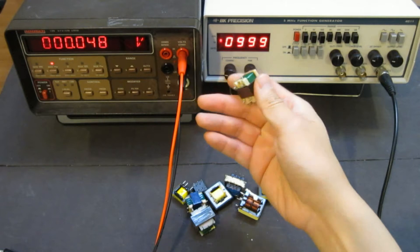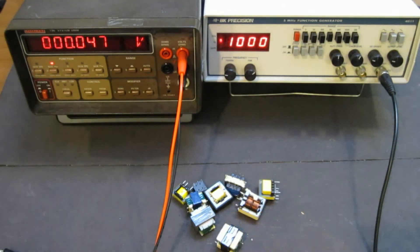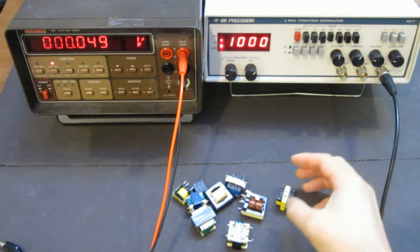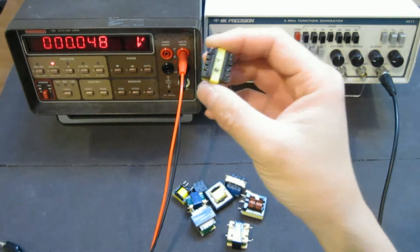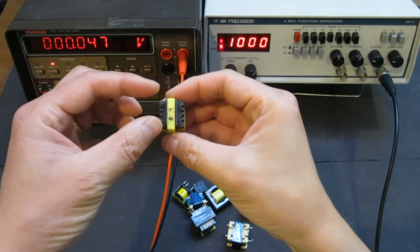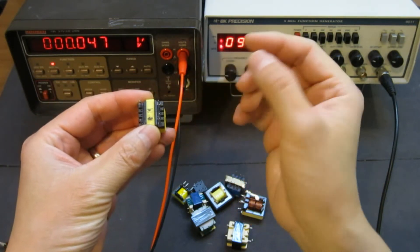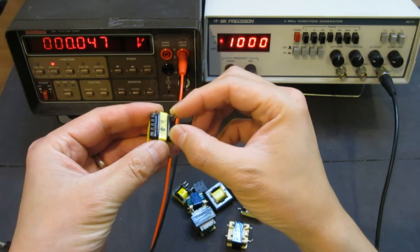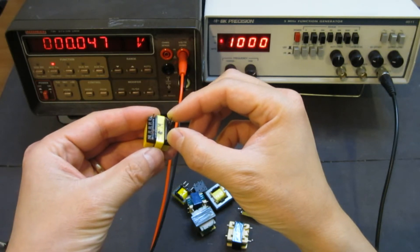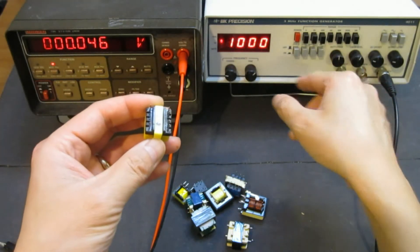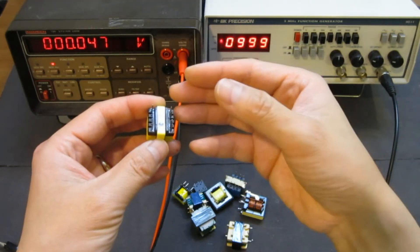So we can solve this problem by using a function generator. So the basic idea here is I'm going to input a voltage into one side of the winding, typically the primary, and using a multimeter to measure the output voltage. So by varying the frequency, we can see what the response is.